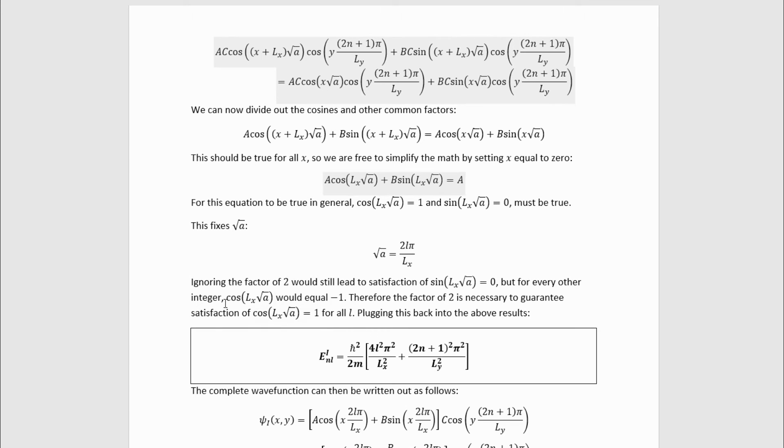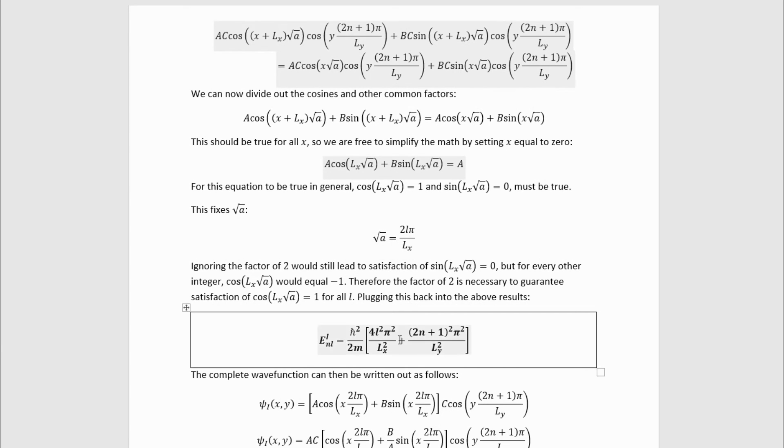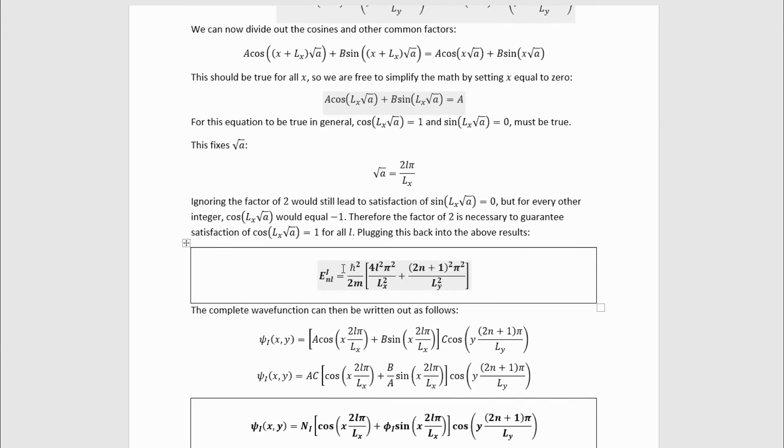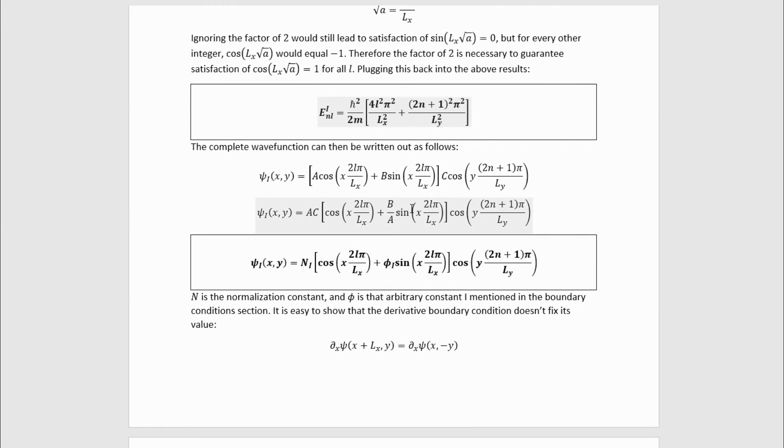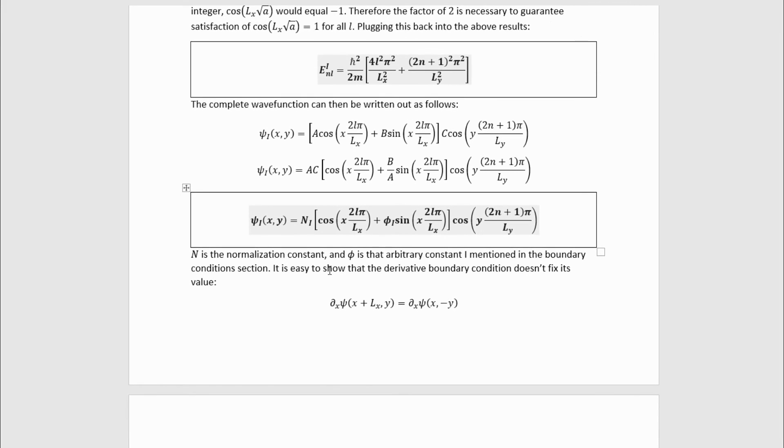If this is to be true, this cosine needs to be one and this sine needs to be zero always, which is only true for this value of root a. Ignoring the factor of two would still satisfy the sine equals zero part, but it would not always satisfy the cosine equals one part. Sometimes cosine would equal minus one, specifically for every other integer. Therefore, the factor of two is necessary to guarantee that the cosine condition is also satisfied simultaneously. Plugging this into the energy eigenvalues gives us this complete result for the case one energy eigenvalues. And the complete eigenfunctions are just this. I just move some constants around to make it look nicer and more formal.